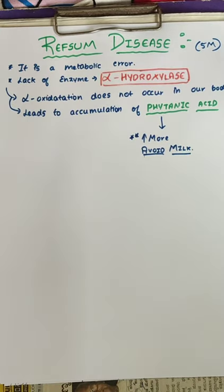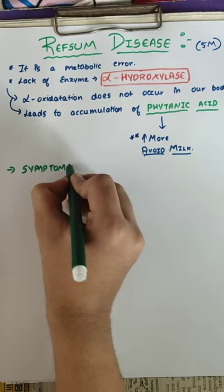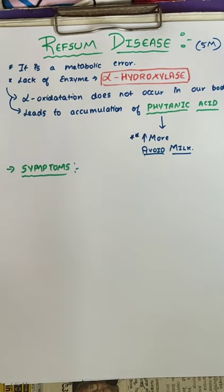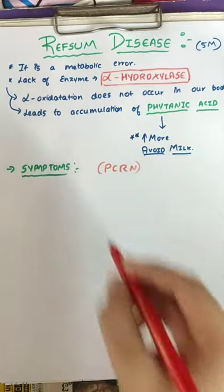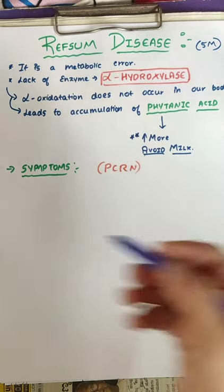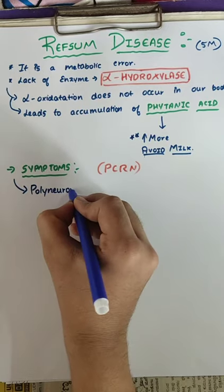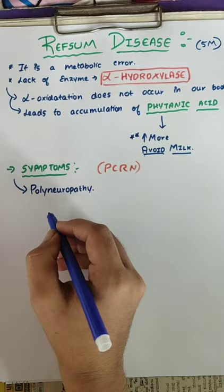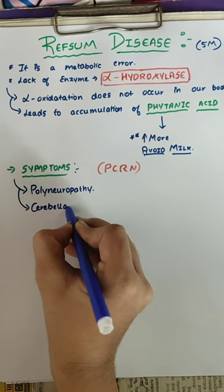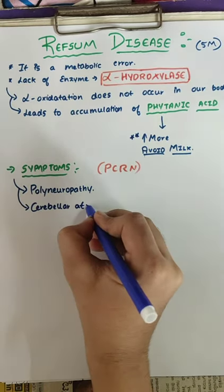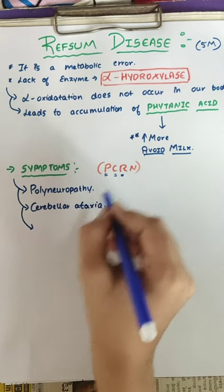Now the symptoms found in Refsum disease — remember there are four symptoms and the hint is PCRN. First one is polyneuropathy. Second one is cerebellar ataxia, meaning there will be problems occurring in the cerebellum.